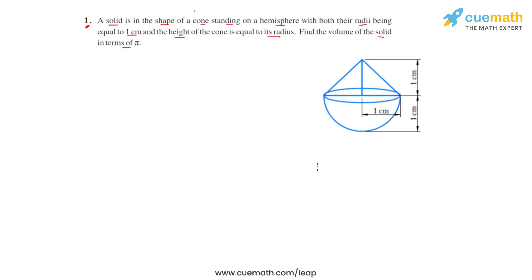To start with, we must first visualize how the solid will look like, as it is a combination of a cone standing on a hemisphere. This is how the solid will look like. As given in the question, the radii for the hemisphere and for the cone are the same, being equal to 1 centimeter. Since the radius of the cone is 1 centimeter, its height will also be equal to 1 centimeter.